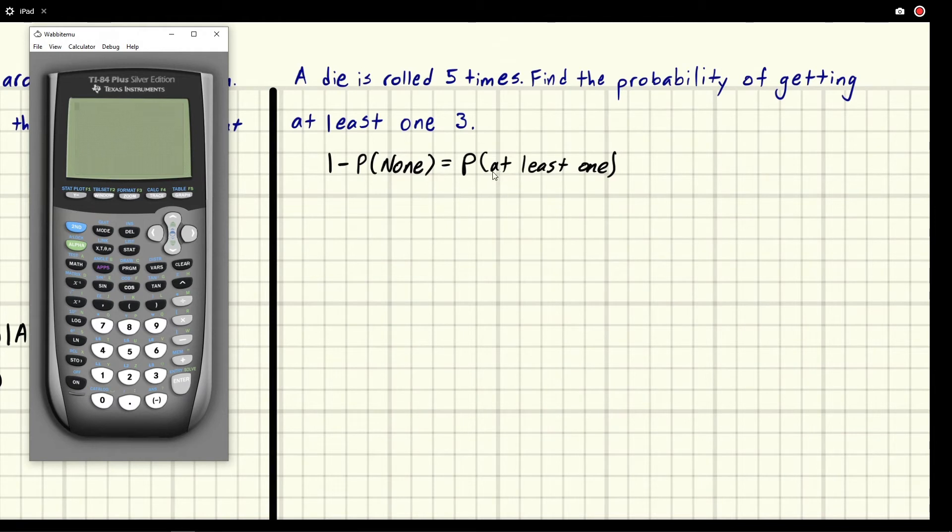We're saying, well, all the stuff that happens in at least one, the one case this doesn't account for is when no one does it. When no one does it, this is not fulfilled. It's the one time it's not. So we just say, well, if we take 100% minus that, we'll get the chance that we get at least one. In this case, we're looking for one three.